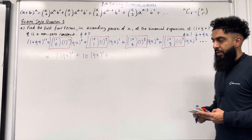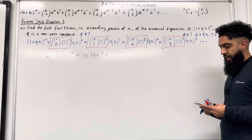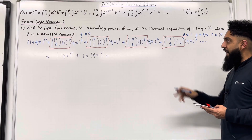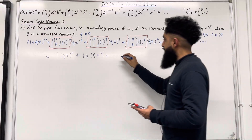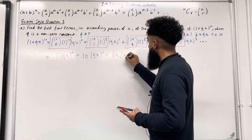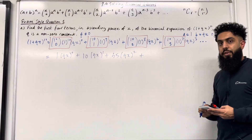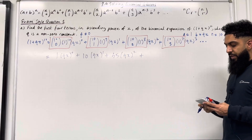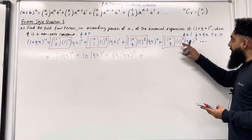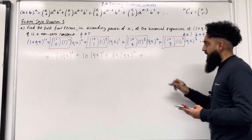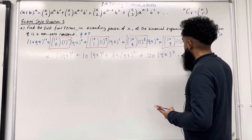Let's simplify the third box. 10C2 = 45, multiplied by 1^8, which is just 45. For the final box: 10C3 = 120, multiplied by 1^7, which is just 120. Dot dot dot.